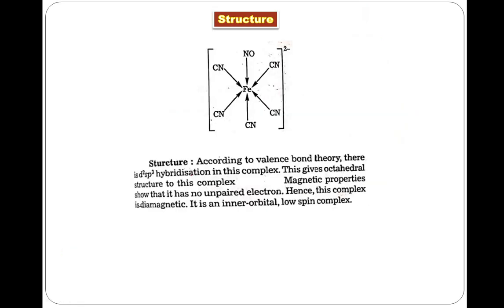Let's move to the structure. This is an octahedral complex with six ligands at the six corners of the octahedron. The overall charge on the complex is -2, which is stabilized by two sodium ions. According to valence bond theory, its hybridization is d2sp3 and the geometry is octahedral.